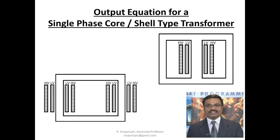What is the difference between single-phase core type and shell type transformer? In a core type transformer, the winding encircles the core, whereas in the shell type transformer, the core encircles the winding. This means in a core type transformer the winding will be the outermost part, whereas in the shell type transformer the core will be the outermost part.